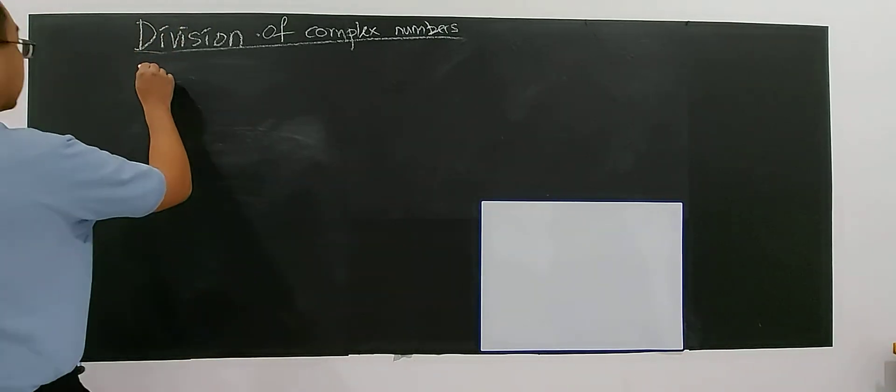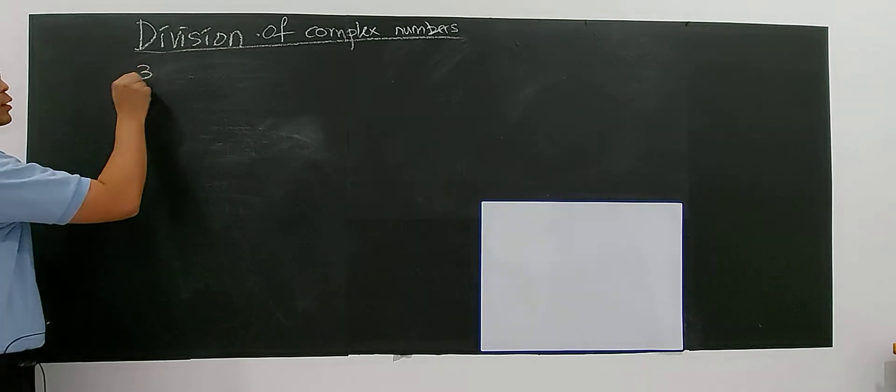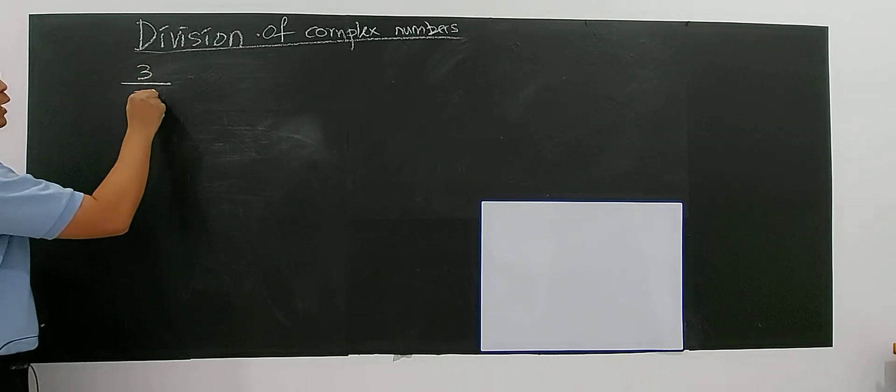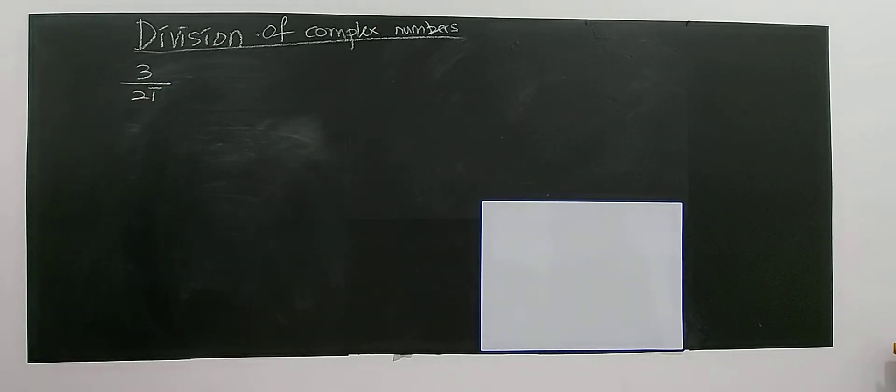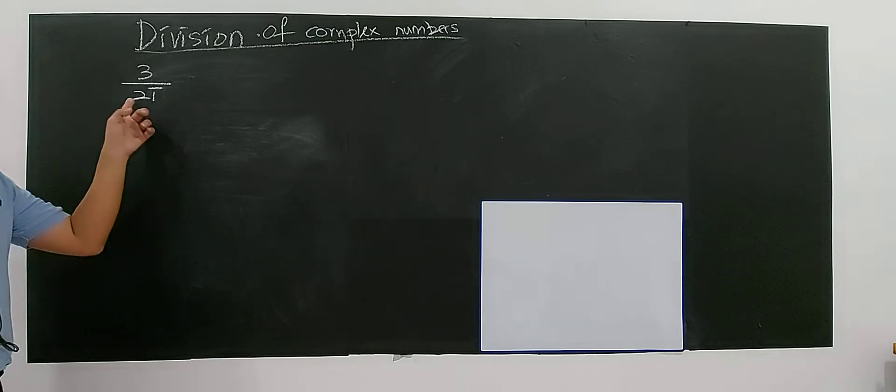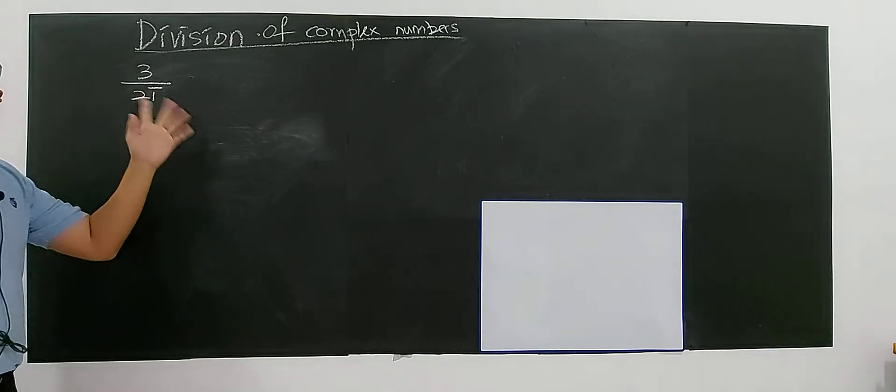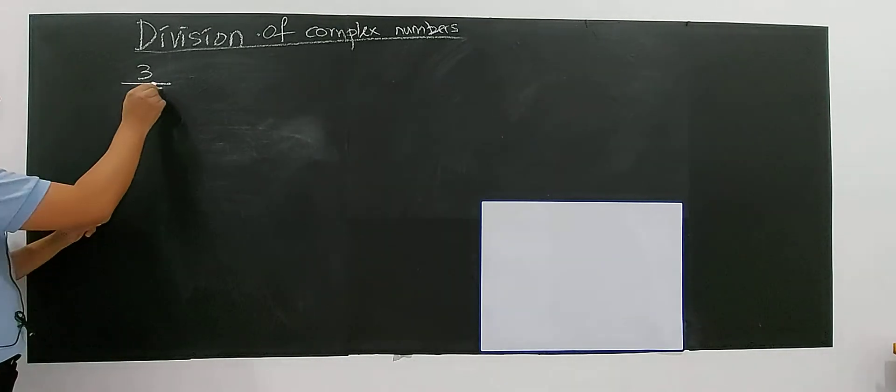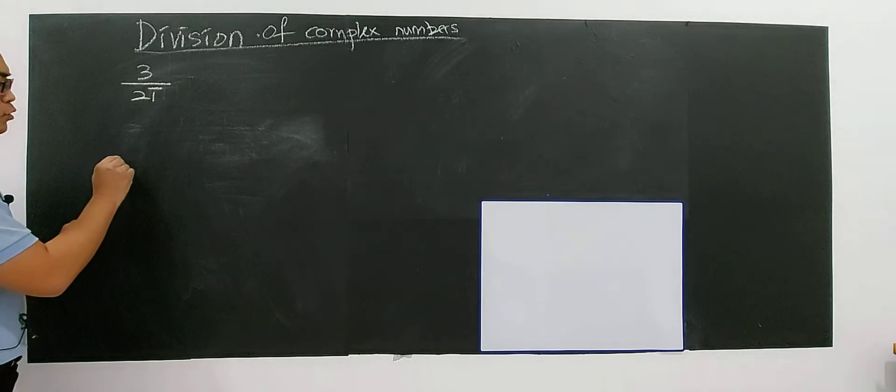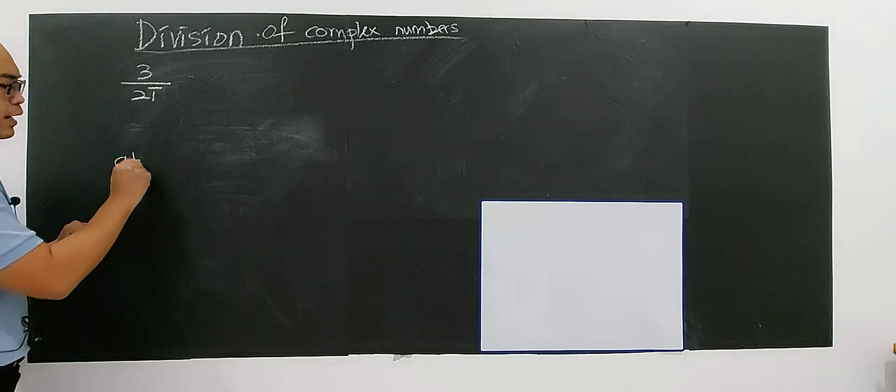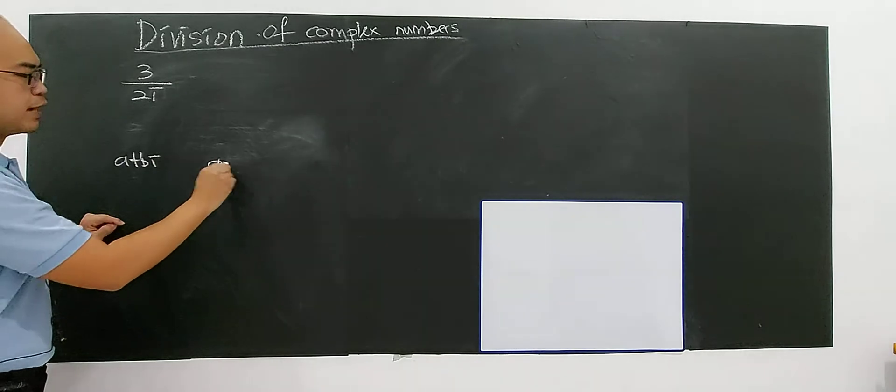Alright, let's look at another type of division. For example, if I have 3 divided by 2i. So as you know, for this we don't talk about conjugate if this is not in a form. If for imaginary, if we talk about a plus bi, then the complex conjugate will be a minus bi, right?